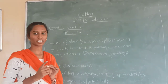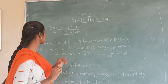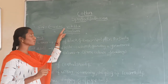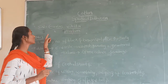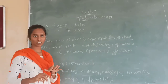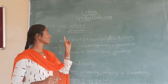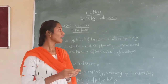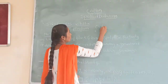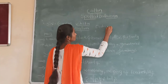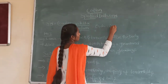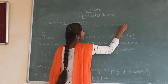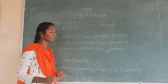I am going to show you Spotted Bollworm. The scientific name is Earias vitella. I am going to show you two species — Earias vitella and Earias insulana. And the order is Lepidoptera.